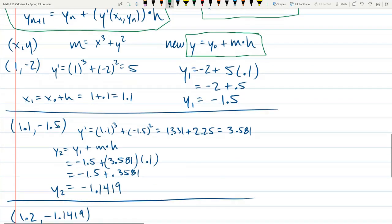And if we look down below, I play the same game, except now, instead of x, y being 1, negative 2, x, y is 1.1 and negative 1.5. Use the formula for y prime with these values. This is quite a bit uglier. I use the calculator, and that was boring. I don't want you to see me typing the numbers in. So that's what you get when you type those in. 3.581 is the new slope. And then I wrote the simplified formula right here, plugged in y1, m and h, computed it out. We get negative 1.1419, that's y2.